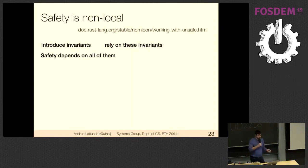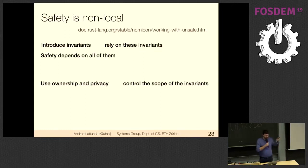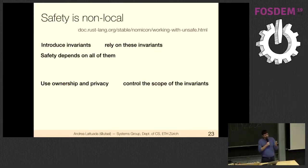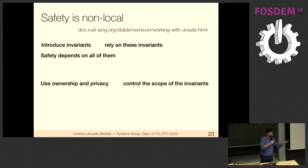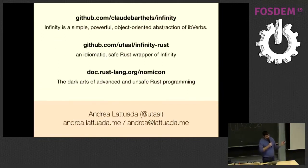Safety depends on all invariants introduced anywhere in the unsafe and safe Rust codebase. What can we do? We can't track everything in the whole program, so use ownership and privacy — private members to limit the scope to which invariants apply. The only thing that interacts with Buffer in our API is the provided functions, and the only entity that can do things with the buffer is our wrapper. Try to limit the scope of your expectations.